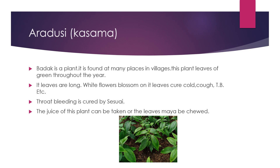The next one is arduci, also known as wasaka. It is a plant found at many places in villages. The leaves of this plant remain green throughout the year. Its leaves are long and white flowers blossom on it. Its leaves cure cold, cough, TB, etc. Throat bleeding is cured by arduci. The juice of this plant can be taken or the leaves may be chewed.